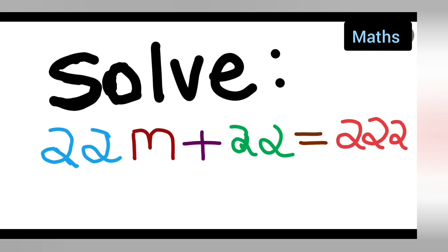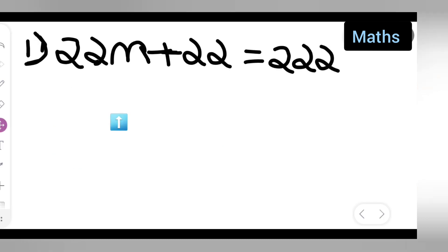So welcome for today's class of mathematics. Today's question is solve 22m plus 22 is equal to 222. In this given equation we need to find the value of m. So in stepwise order we need to do this.